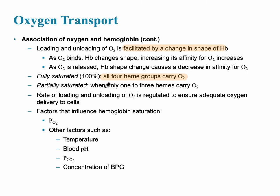When only one to three hemes are carrying oxygen, it's partially saturated. This is what happens as the hemoglobin molecule travels from the left side of the heart through the systemic arteries — oxygen is unloaded and the hemoglobin becomes more and more partially saturated, especially as it continues past the systemic blood vessels into the veins.